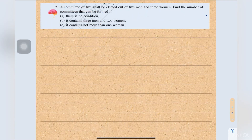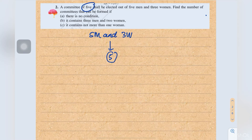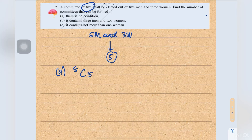Number 2: a committee of five shall be elected out of five men and three women. Find the number of committees that can be formed if A, there is no condition. We have five men and three women, so eight people in total. We choose five from eight: 8C5 equals 56 ways.